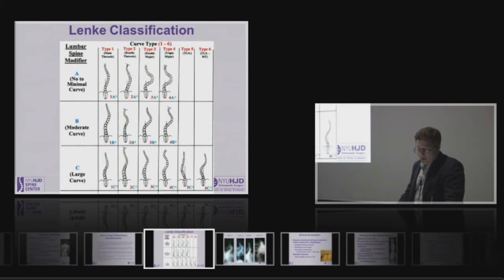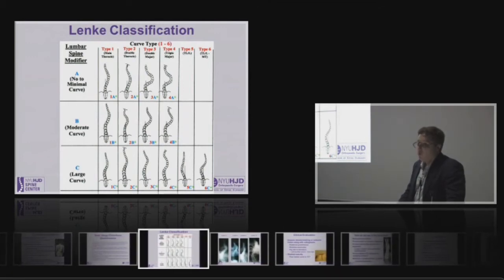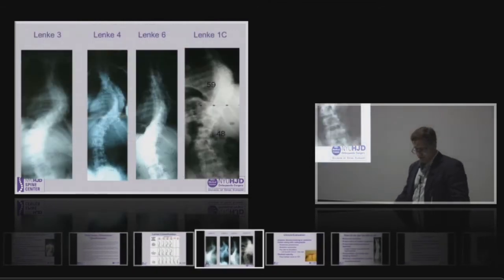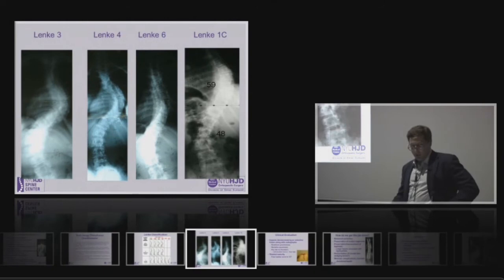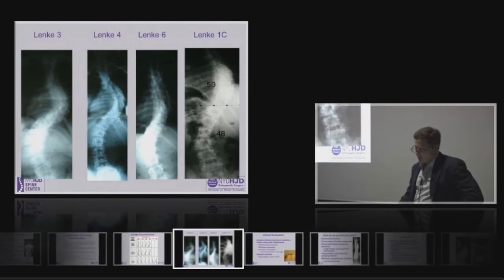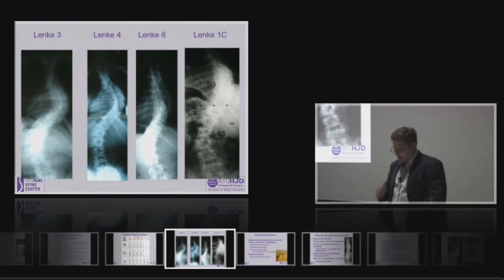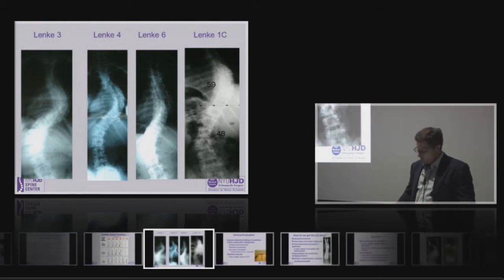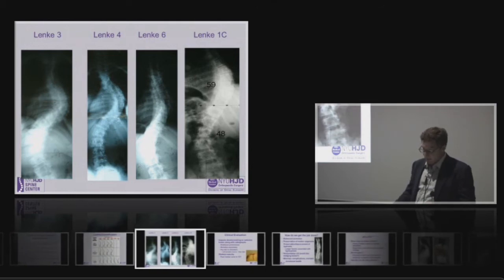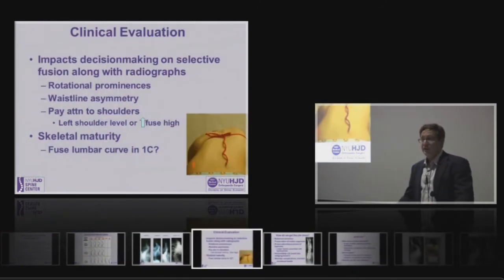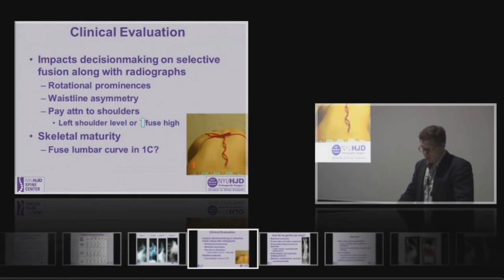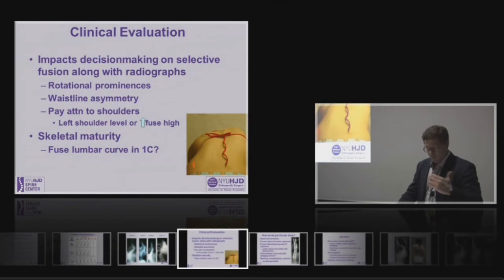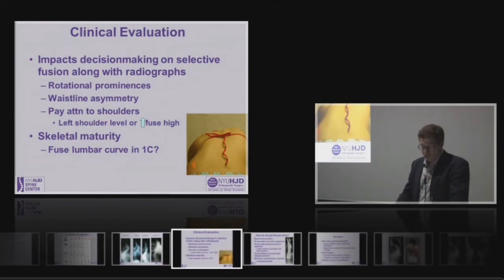The Lenke criteria are here, and I'll focus today on Lenke 3, 4, and 6 curves and type 1Cs. All four are shown. The Lenke 1C has a significant lumbar curve of 48 degrees, but this is flexible. Should we be fusing those curves or not? I don't really have the answer, but we can certainly consider not fusing the lumbar curve in a lot of those 1Cs, and also in some of the other what has been radiographically perceived as a structural curve.